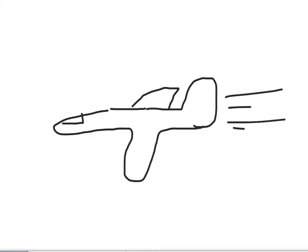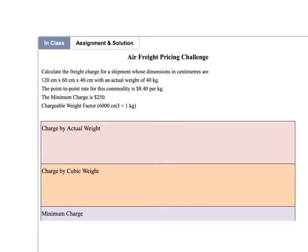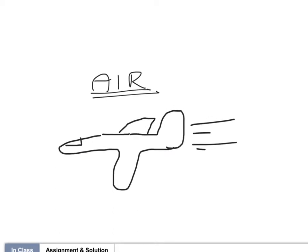Hi everyone, in this tutorial we are going to look at pricing by air. We're going to specifically look at pricing, breaking it down by actual weight, dimensional weight, and we're also going to apply a rudimentary minimum charge. But before we do that, let's talk theory for 30 seconds.